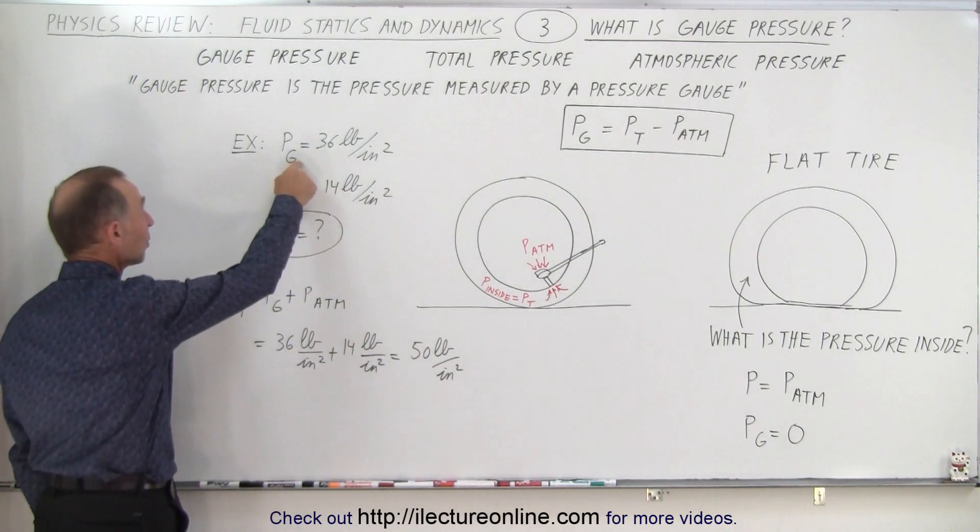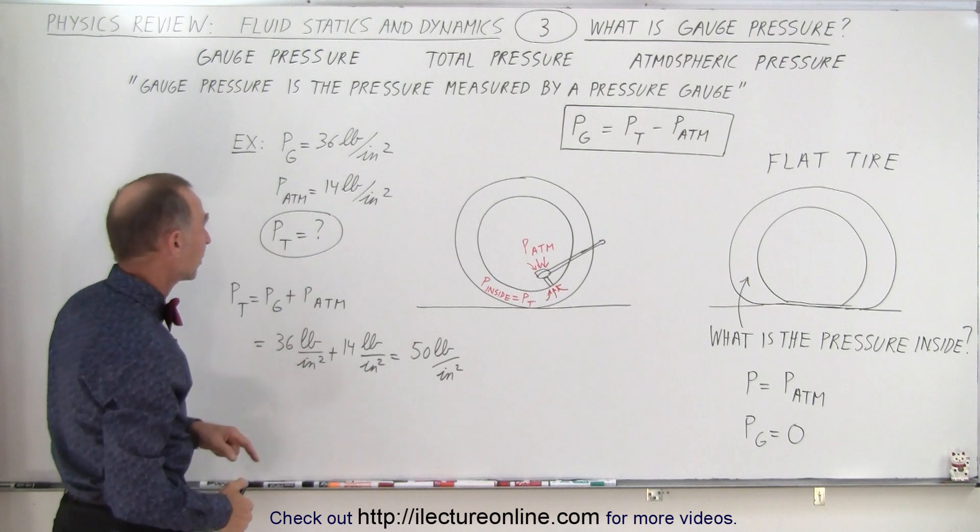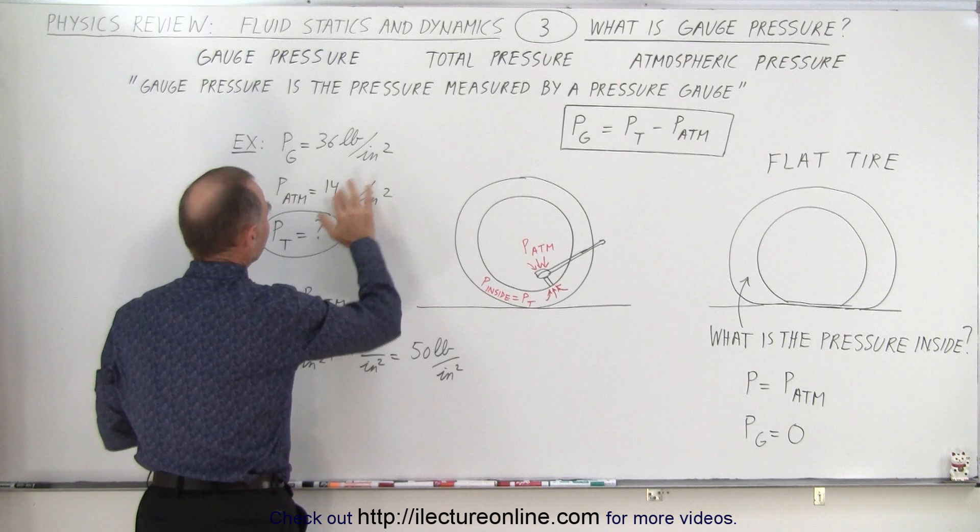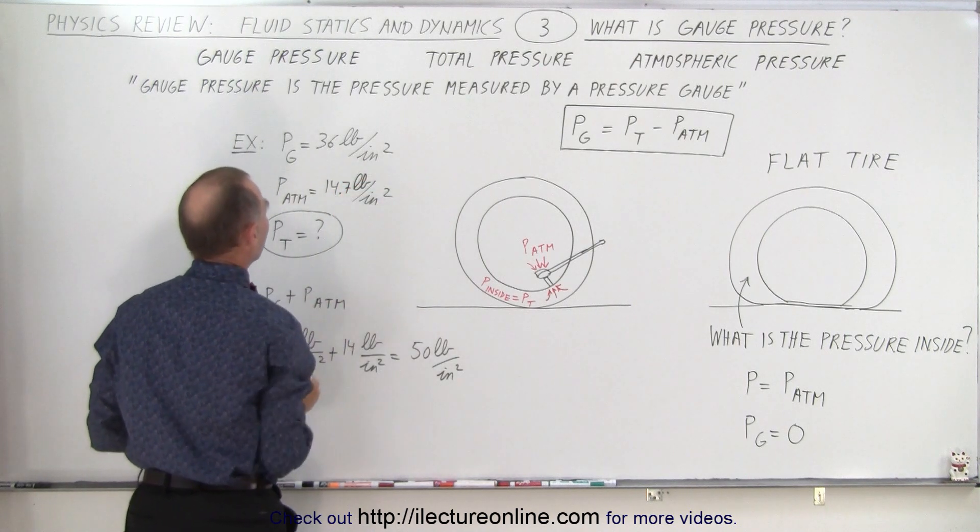For example, let's say that we measure the pressure in the tire and we get 36 pounds per square inch. We know that the atmospheric pressure, let's say I'm not quite correct there, it's actually 14.7 pounds per square inch.